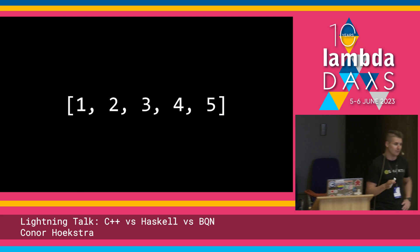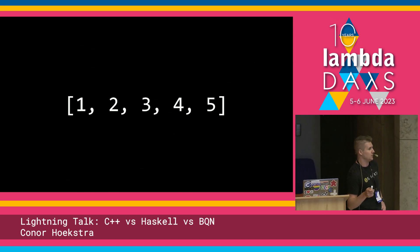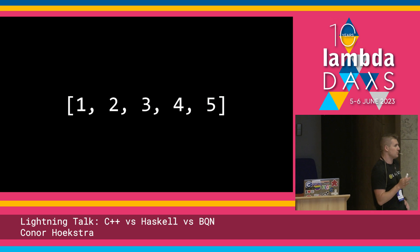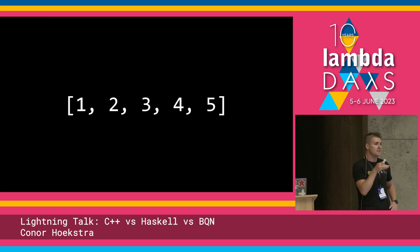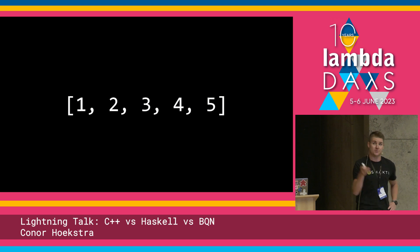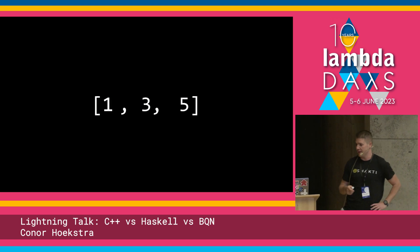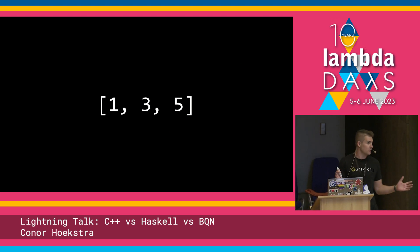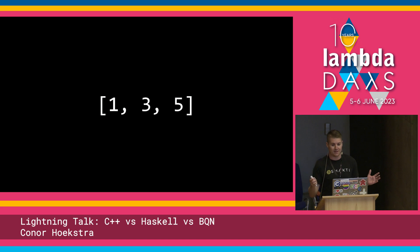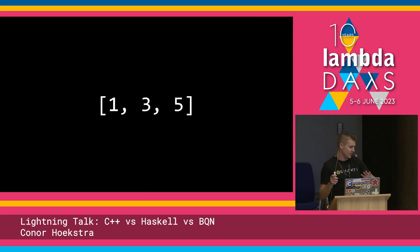On to the talk. We're going to solve a very simple problem in three different programming languages, and that is just filtering in the odds given a list of integers. So if you start with a list of one to five, you're going to end up with one, three, five. Pretty straightforward — hope you're all keeping up, but we're going to go very quickly.